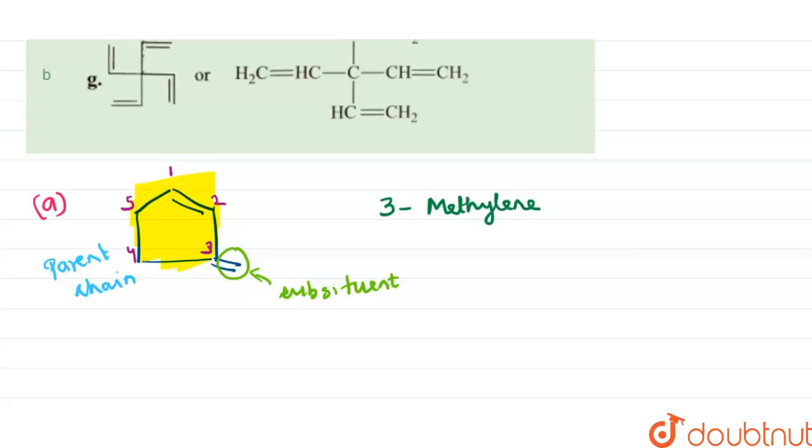This group is methylene basically. Methylene cyclopent-1-ene. Our methylene group basically is this group: double bond CH2.